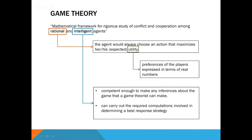Informally, the term 'intelligent' is used in its dictionary sense. More formally, we assume that the agents are competent enough to make any inferences about the game that a game theorist can make. They can also carry out the required computations involved in determining a best response strategy. Now let us look at an example of a game and how to analyze it.